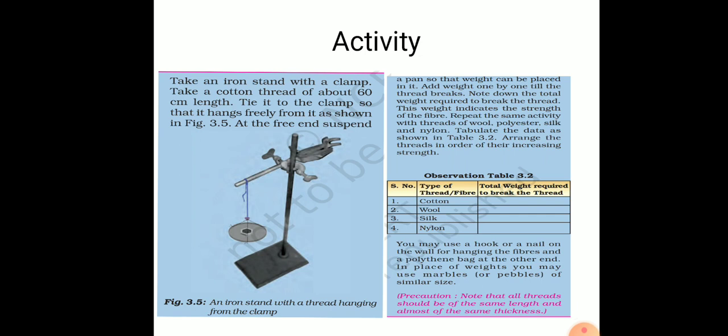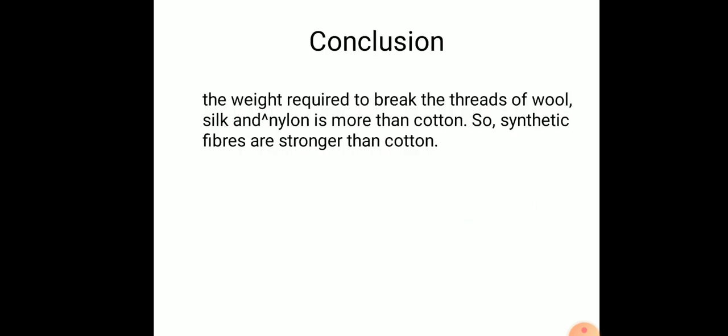In this activity, we have taken four types of threads—cotton, wool, silk, and nylon. In the pan, we add weights till the thread breaks to check the strength of these fibers. Make sure when performing this activity, take all threads of the same length and almost the same thickness. Add the weight, observe, and write down the results.